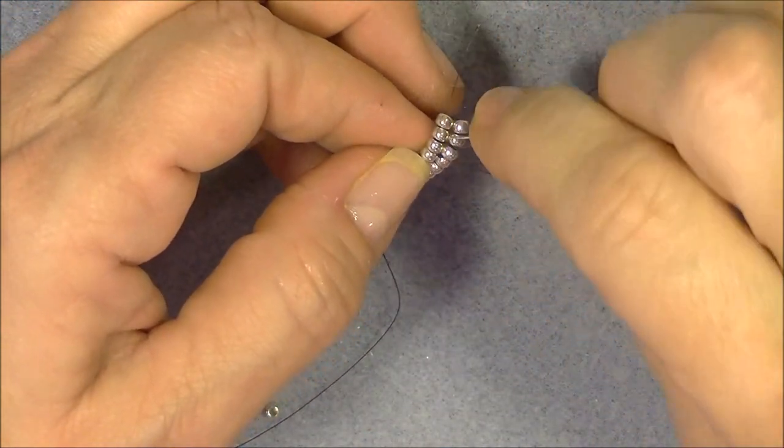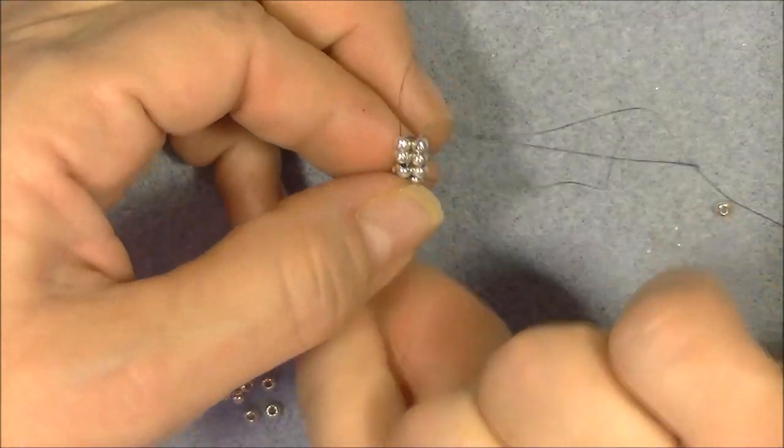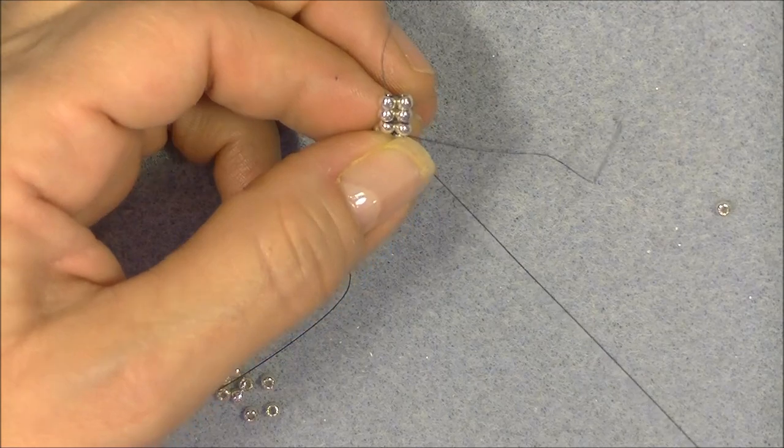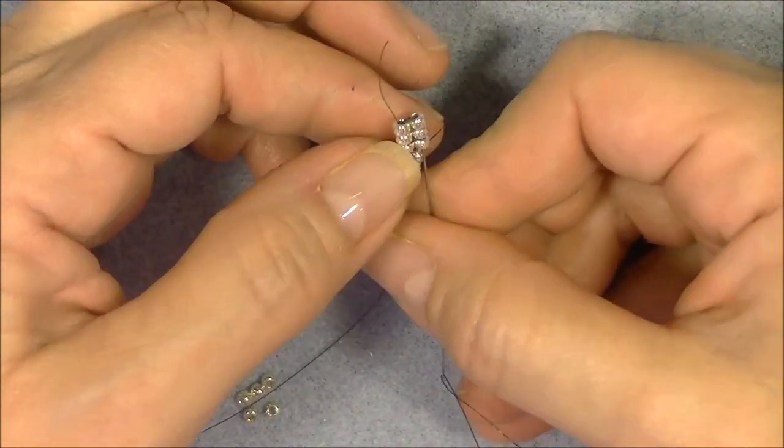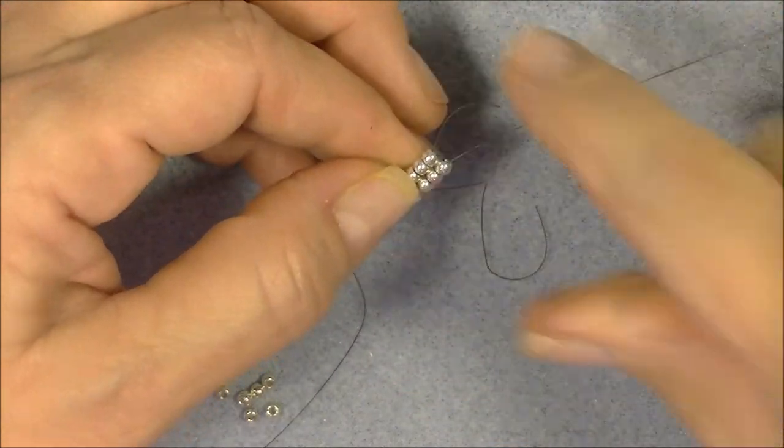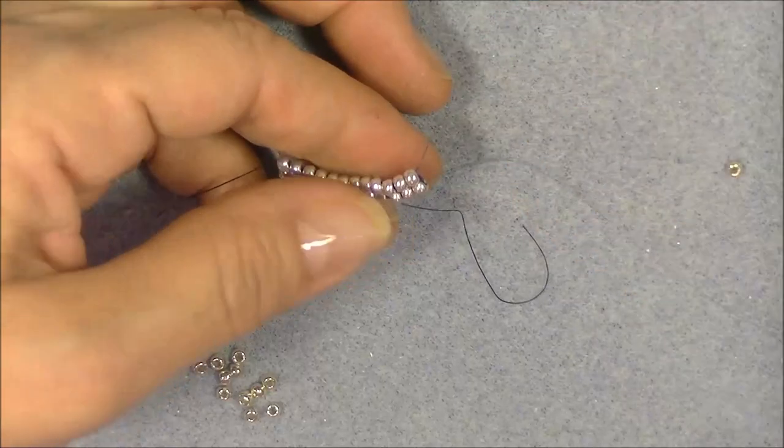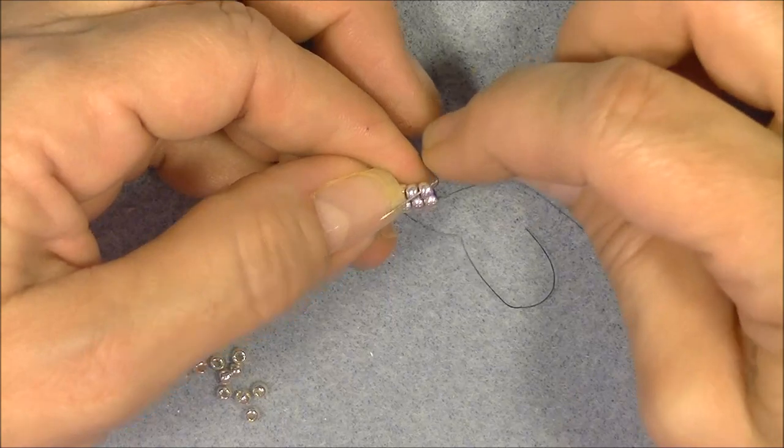Then I'm going to go down through this one right here. This is just to secure whatever stitch you're using. You'll just sew through some of the existing work you've already done and then sew back up through to where you need to continue with your work and then you can continue your work.